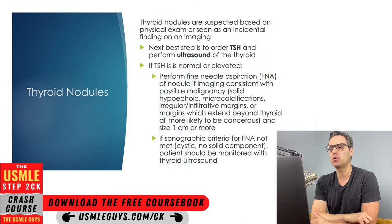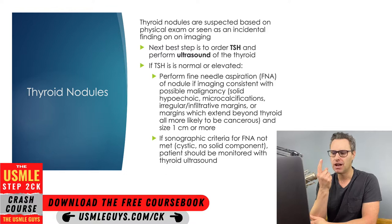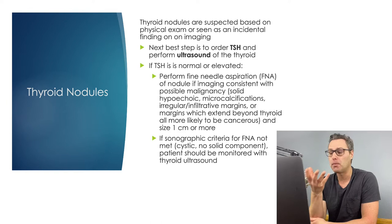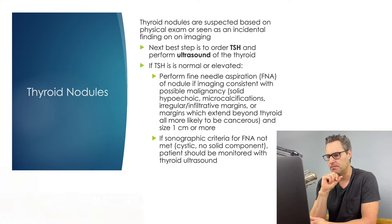We touched on this briefly in the hyperthyroidism lecture when we talked about the toxic adenoma and the toxic multinodular goiter. So you either palpate a suspected nodule during the neck exam, or you see a suspected nodule incidentally on CT or while performing an ultrasound of the carotids or some other imaging study. At that point, the next best step is to order TSH and perform an ultrasound of the thyroid — those are jointly the next best step. They shouldn't really ask you on the exam to distinguish between these two because they're listed together in the guidelines.